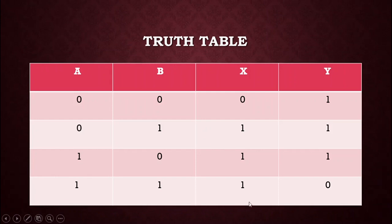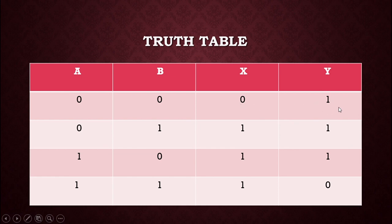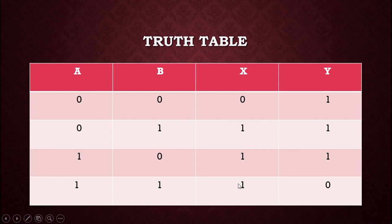Let's see the truth table. Here you can see two inputs A and B and two outputs X and Y. When both inputs are 0, X is 0, meaning the red probe is 0 and the green probe is 1. When A is 0 (heat sensor off) but smoke sensor B is 1, both red and green probes are 1. Similarly, when heat sensor is 1 but smoke sensor is 0, both red and green probes are 1. But when both heat sensor and smoke sensor are 1, only the red probe is 1 and the green probe is 0, meaning the current is off — whereas in the previous three states the current was on.